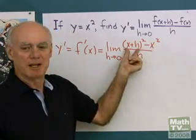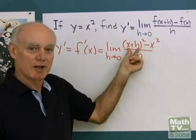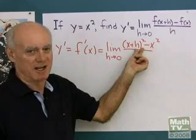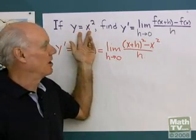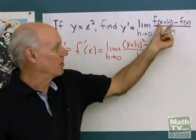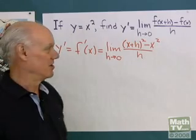So the mistake I see people making the first few times they do this is instead of x plus h quantity squared, they'll have x squared plus h. But that's not what this says. f of x is equal to x squared, so if I have x plus h inside the parentheses here, when I square it, I have to get x plus h quantity squared.